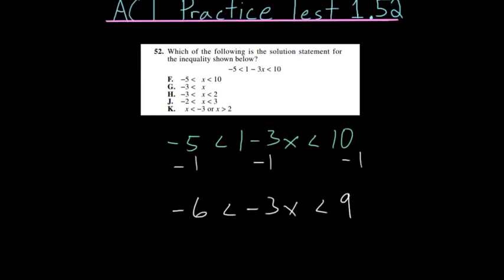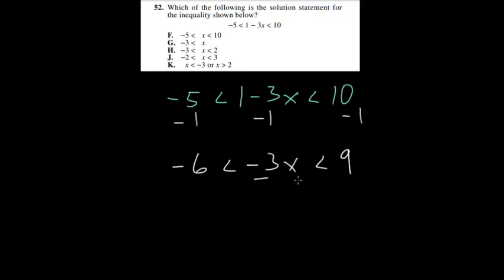And from here, to solve for x, what we'd have to do is divide everything by this minus 3. Though recall what I mentioned earlier, that since we're dividing by a negative number, we have to flip all the signs. So minus 6 divided by minus 3, the negatives cancel out, and we're left with 2, and then the sign switches, so it's greater than. Minus 3 divided by minus 3, these cancel out, and we're left with just x, and then this sign switches too, and 9 divided by minus 3 would be minus 3.